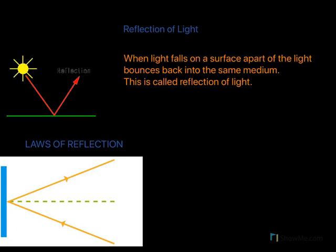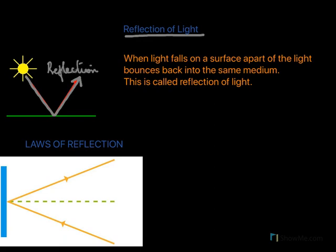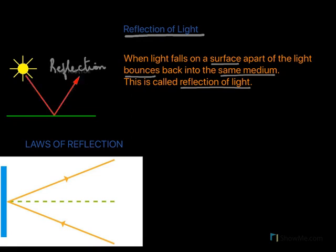Reflection of light is a very familiar phenomenon. When light falls on any surface, a part of it bounces back in the same medium. This phenomenon is called reflection. The bouncing back of light in the same medium is reflection.